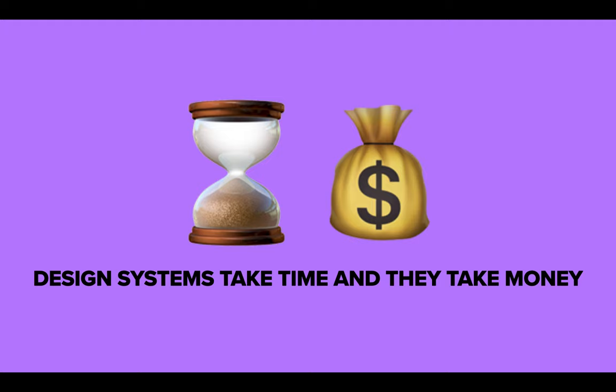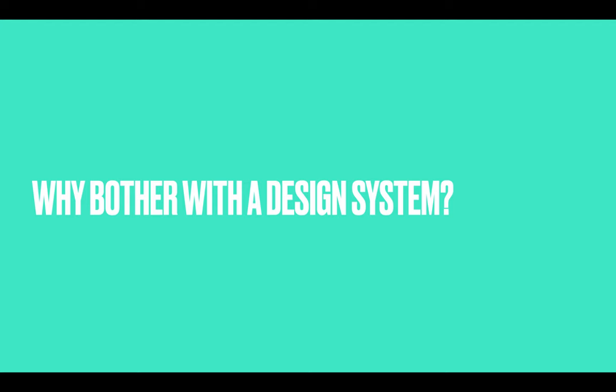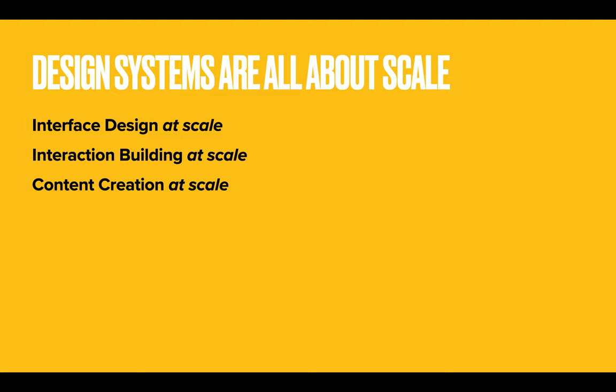We know they take time, but time is money — and that means design systems take money. You can't shortchange this. You should take the time to do it right. So why bother? This seems like an awful lot — we've got to agree on buttons, agree on typography, agree on the tools we're going to use. So what are we getting out of this? And the answer, to borrow a business word, is scale.